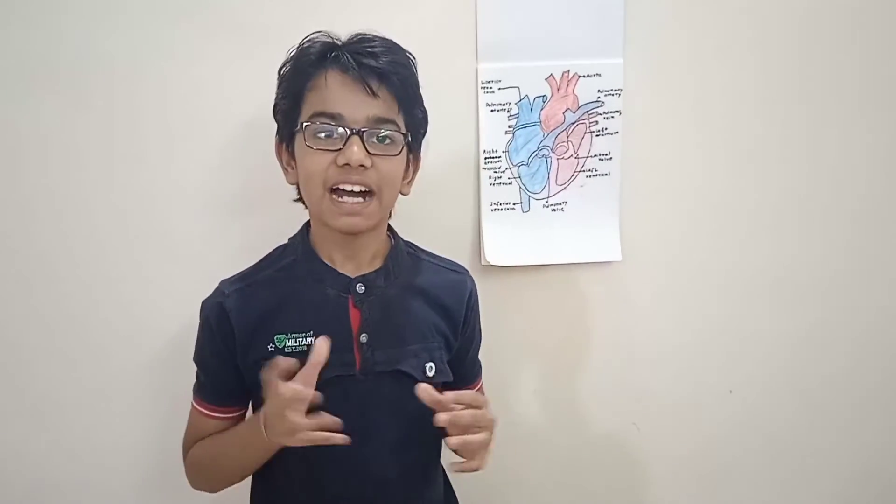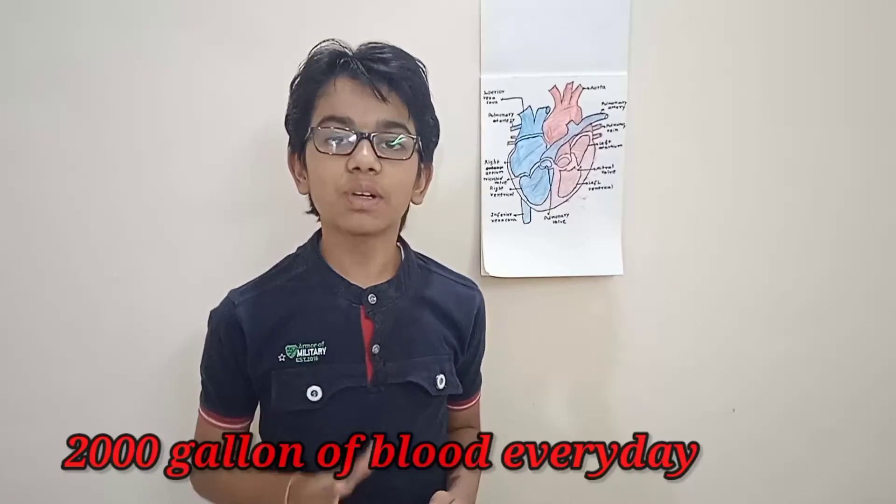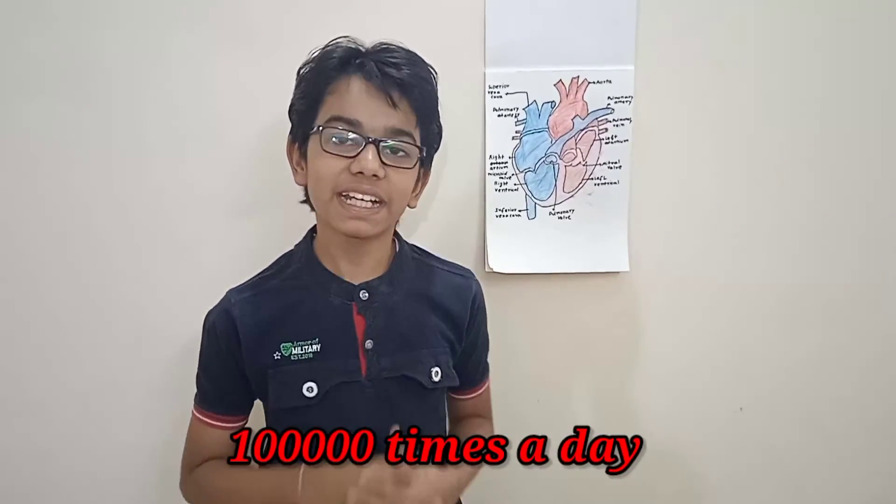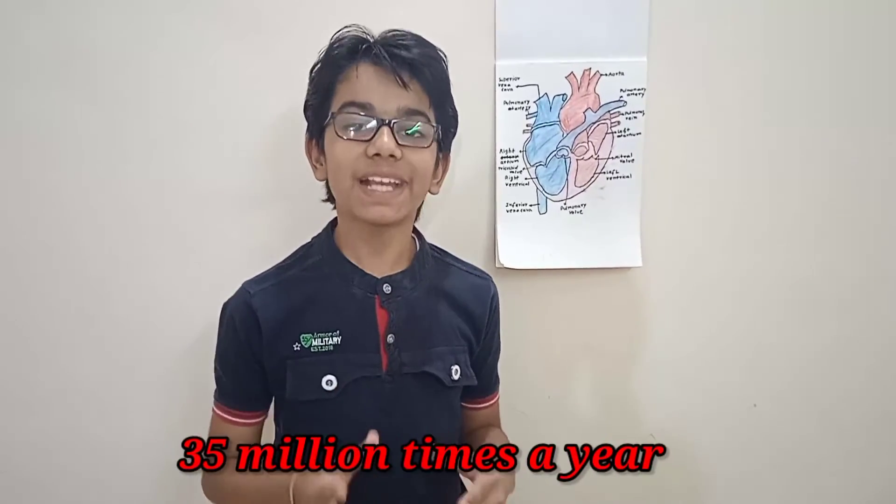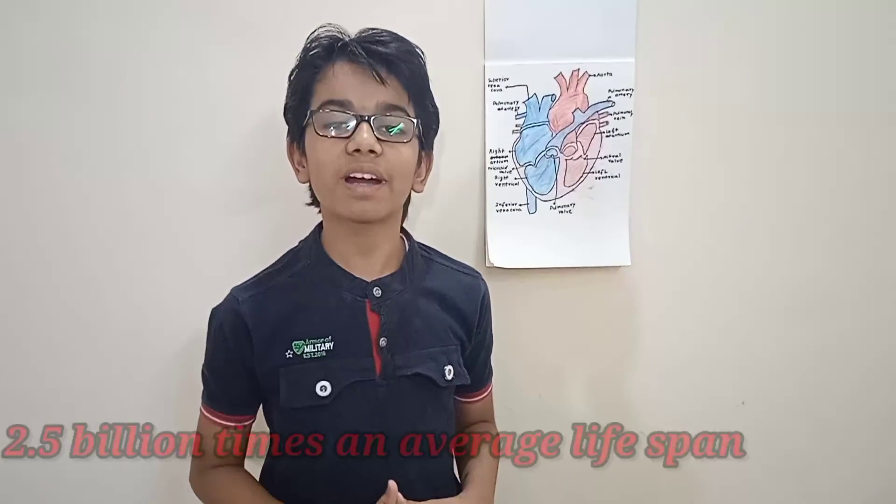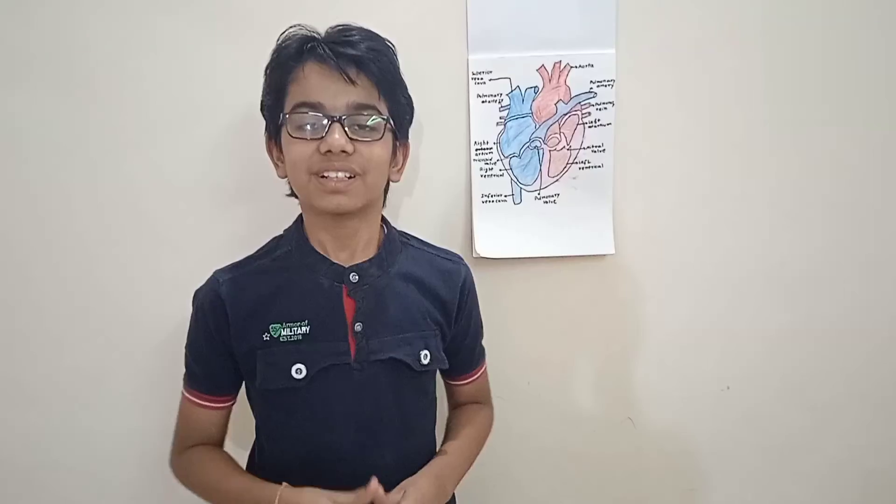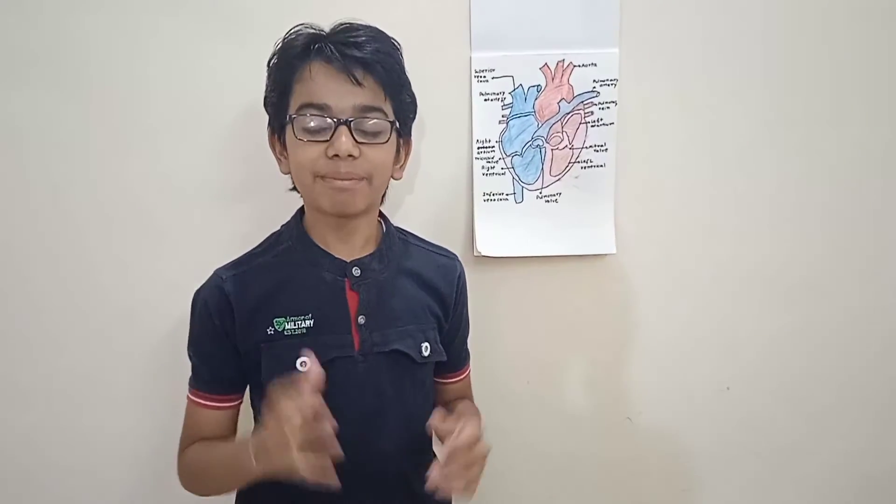So now I will tell about some interesting facts about our heart. First fact is that our heart pumps about 2,000 gallons of blood every day. Second fact is that our heart beats about 1 lakh times a day, 35 million times a year, and more than 2.5 billion times in an entire life span.